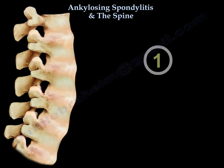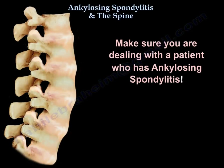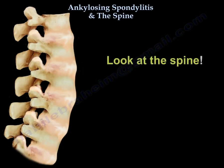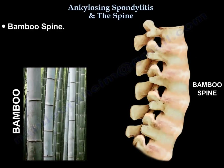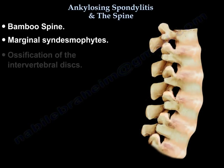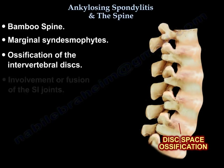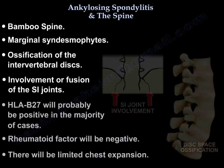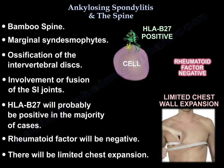Number one: make sure you're dealing with a patient with ankylosing spondylitis. How do you diagnose it? Look at the spine — see if there is a bamboo spine, especially with fusion of the discs and marginal syndesmophytes. You don't have large syndesmophytes in ankylosing spondylitis. Look for ossification of the intervertebral discs and fusion of the sacroiliac joints. HLA-B27 will be positive in the majority of cases, rheumatoid factor will be negative, and the patient will have limited chest expansion.